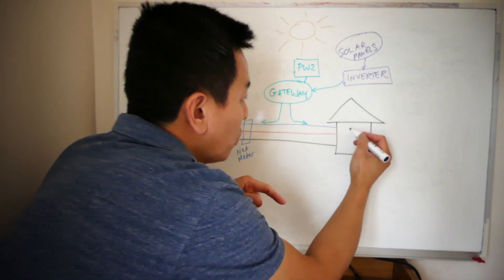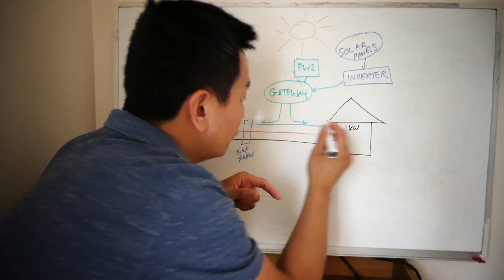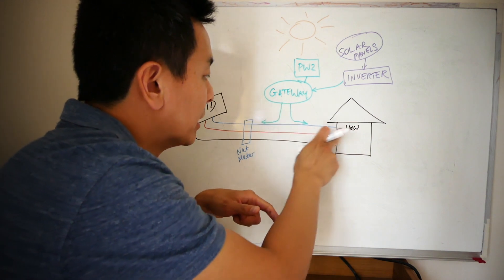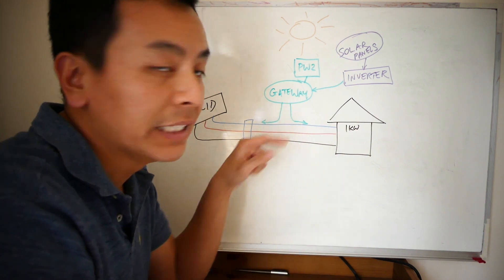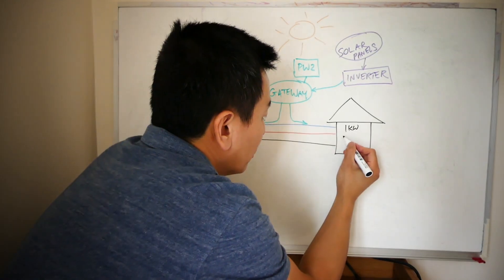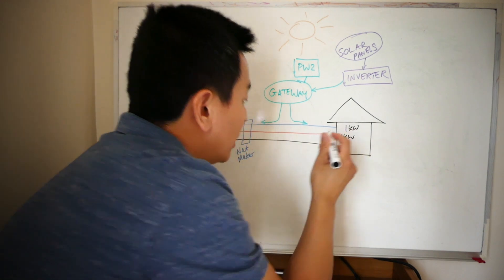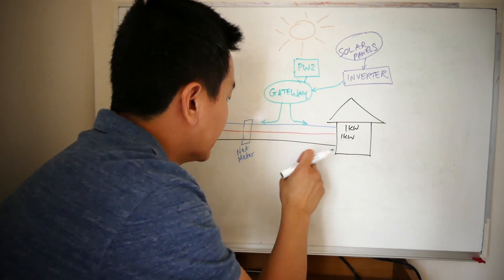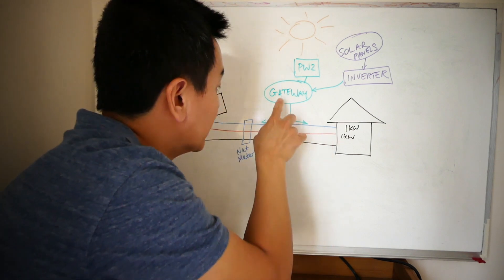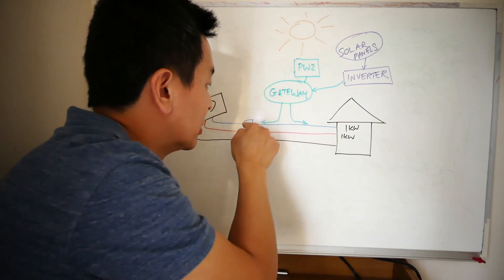If there is a one kilowatt load here on the blue phase, the gateway will happily supply the home on this phase here. If there is a load here on this red phase, what the gateway does is allows the grid to come in with the red phase, but then discharges one kilowatt back here on its own phase.